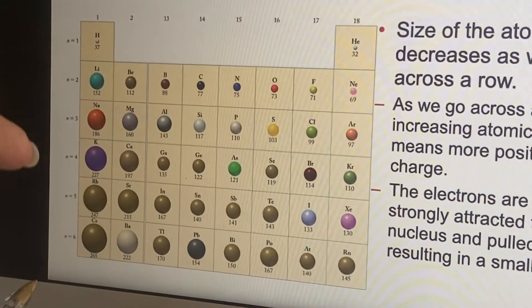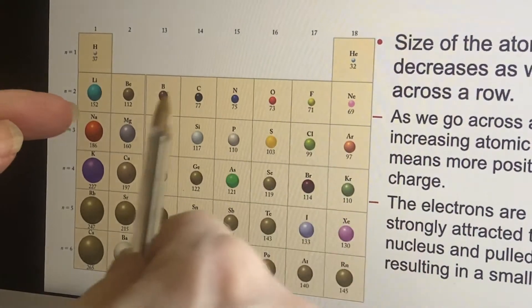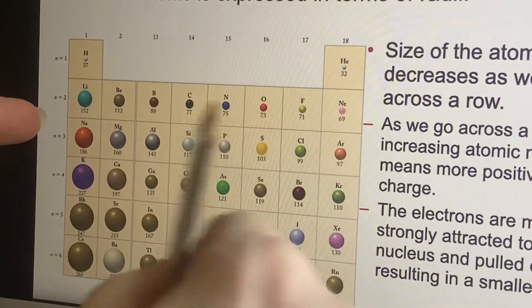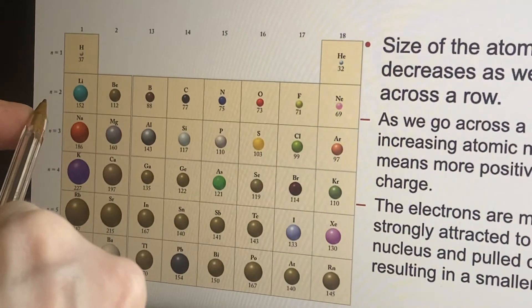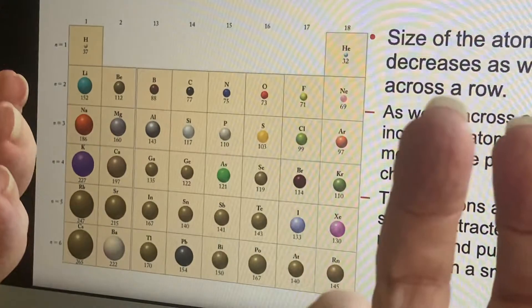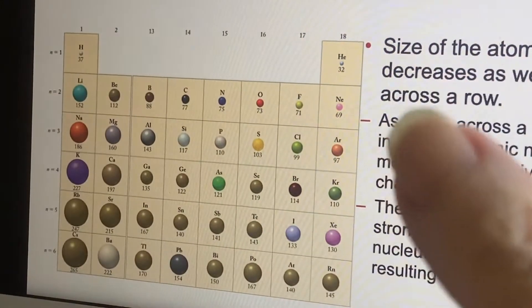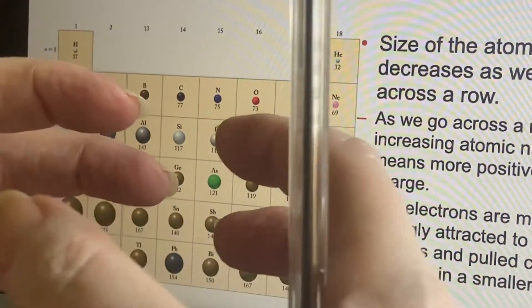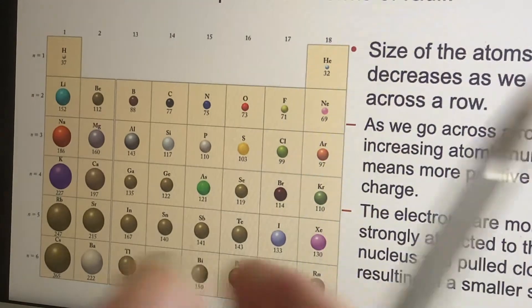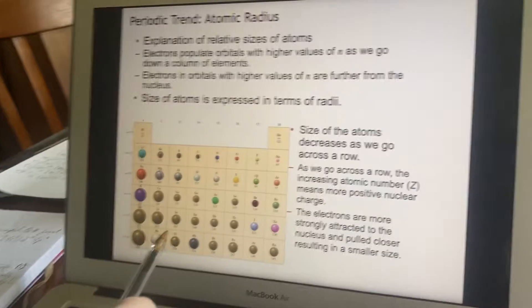But what's going on this way, which is the way to make sense, is we keep adding more energy levels as we go down. As we go across, we're staying in the same energy level, the same period. We keep adding protons and electrons—one's positive, the other's negative—and opposites attract, so these things are actually pulling themselves in tighter because there's more electrostatic force between them.